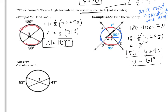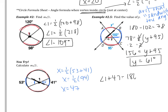Let's see how we did. The vertex is inside the circle here, but not at the center, so I'll use the formula: angle equals one half the sum of the arcs. Angle 1 is sandwiched by two arcs that I don't know. The known arcs in blue sandwich a vertical angle, so I'll find that angle first — I'll call it x. x equals one half of 53 plus 41, which is one half of 94, so x equals 47. Angle 1 is supplementary to x, so angle 1 plus 47 equals 180. Angle 1 equals 133 degrees.